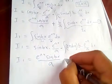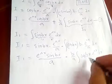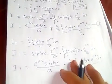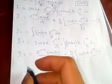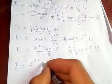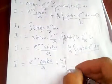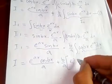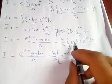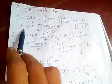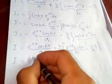So I₁ equals e to the ax times sin bx over a, minus b over a times the integral of cos bx times e to the ax dx. But this integral of cos bx times e to the ax is exactly our original integral I. Substituting back into equation one, I equals e to the ax cos bx over a plus b over a times the expression for I₁.